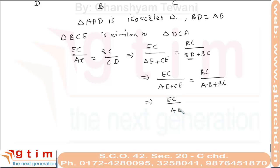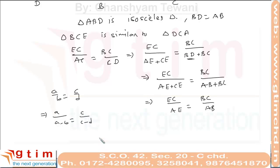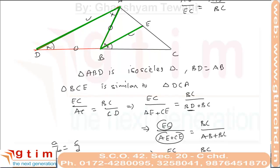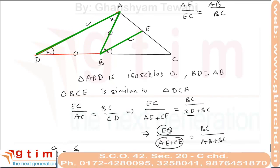From the ratio relationship, BD upon AB equals BC upon AB. Using the property that if a/b = c/d then a/(a−b) = c/(c−d), we can subtract numerator from denominator on both sides. So we have proved that EC upon AE equals BC upon AB — meaning the angle bisector of B divides opposite side AC in the ratio of adjacent sides AB and BC.